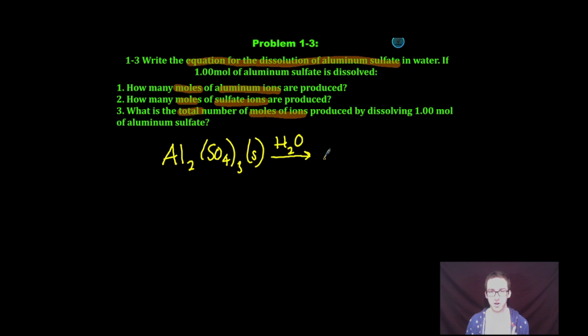So this is going to dissolve into our aluminum ions, which have a 3 plus charge, and our sulfate ions, which have a 2 minus charge.